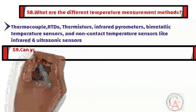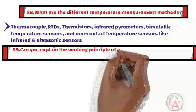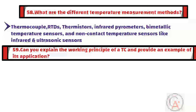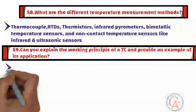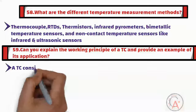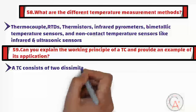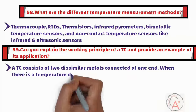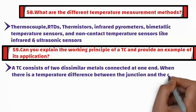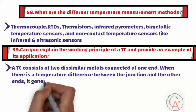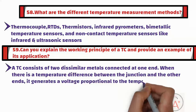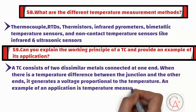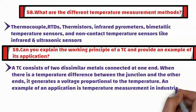Question fifty-nine is: can you explain the working principle of a thermocouple and provide an example of its application? A thermocouple consists of two dissimilar metals connected at one end. When there is a temperature difference between the junction and the other ends, it generates a voltage proportional to the temperature. An example application is temperature measurement in industrial furnaces and ovens.